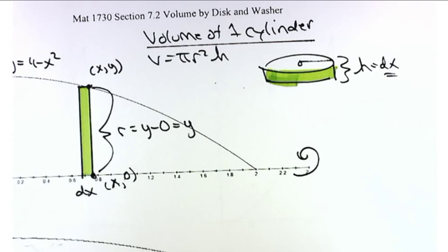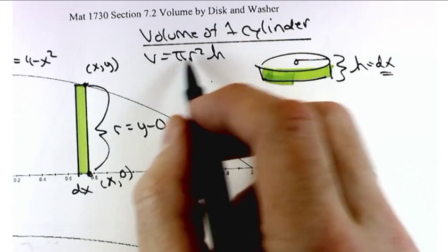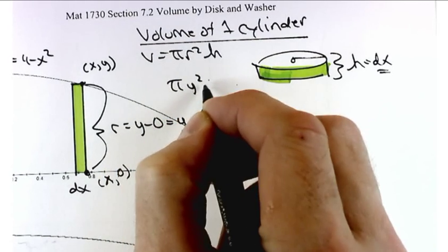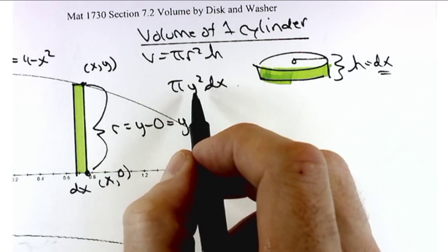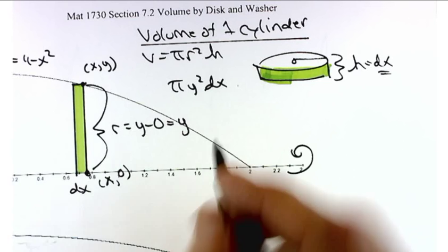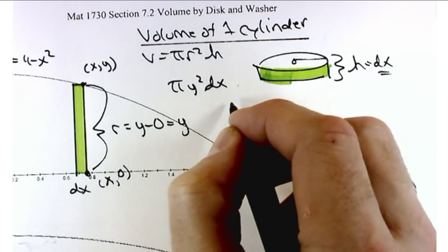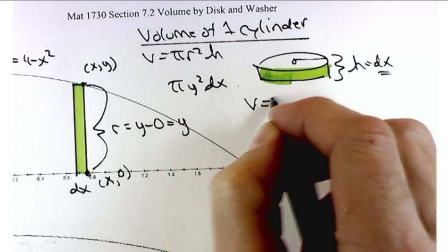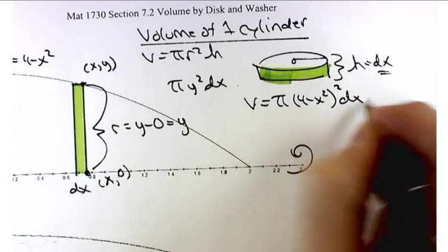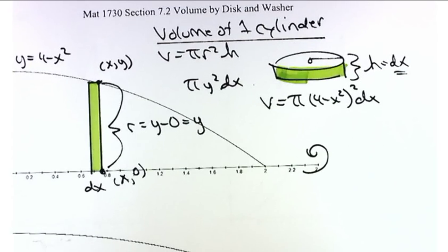It's not enough to have pi times y squared times DX. We need to replace y with something — 4 minus x squared. So the volume of one cylinder is pi times (4 minus x squared) squared, times DX.